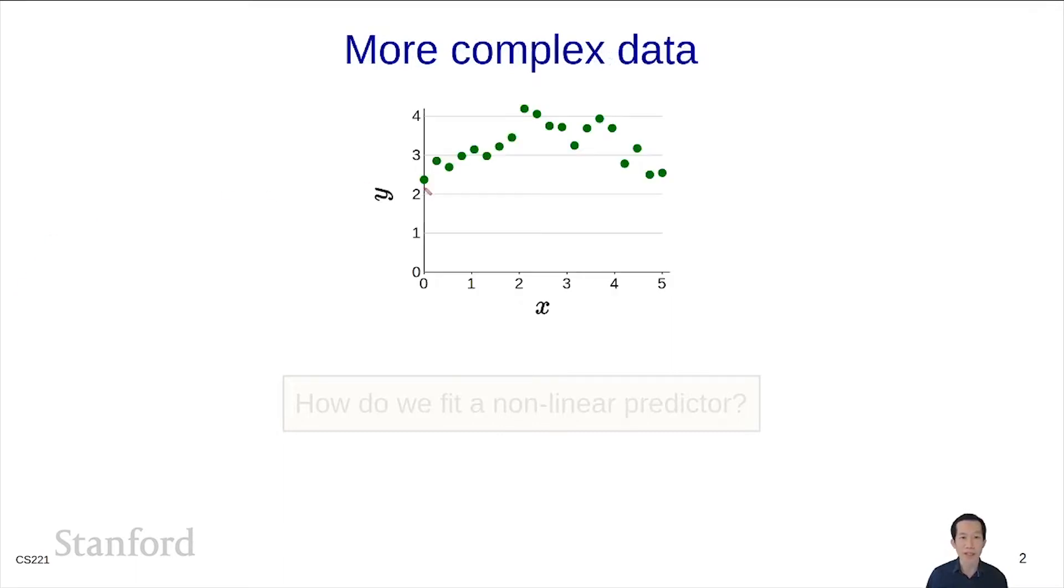But what happens if we get data that looks like this? If you try to fit a line through it, you won't be very happy. You really want to fit some sort of nonlinear predictor, something that can curve around to fit the data. Your first reaction might be to reach for something like neural networks or decision trees, but let's see how far we can get with just using linear predictors.